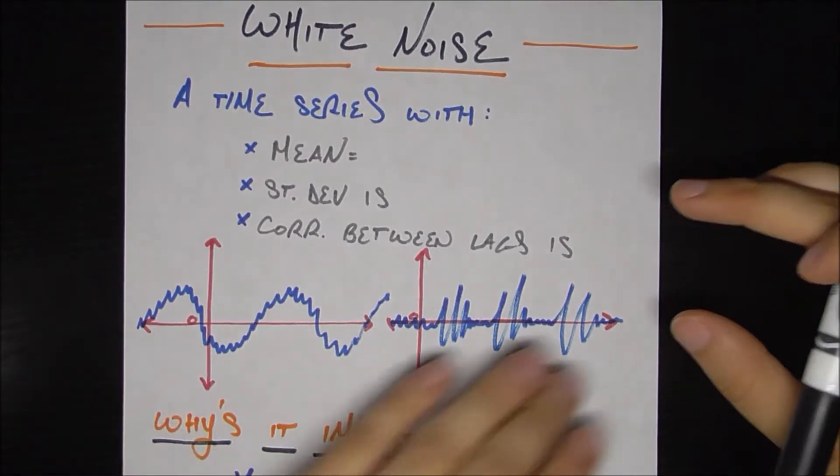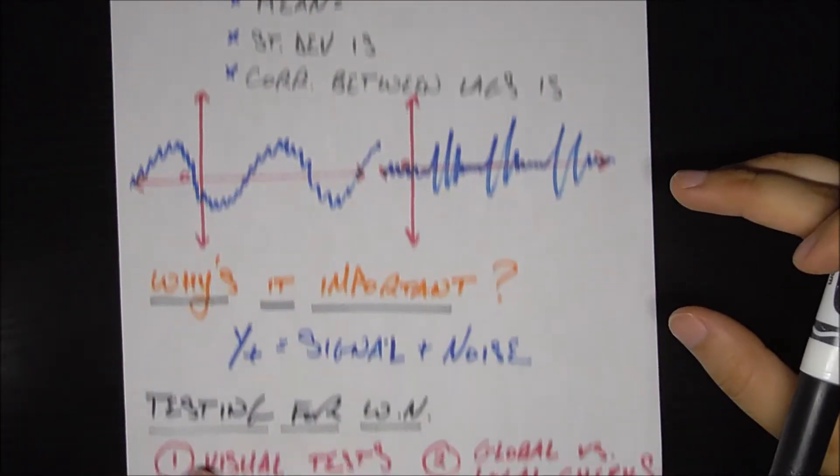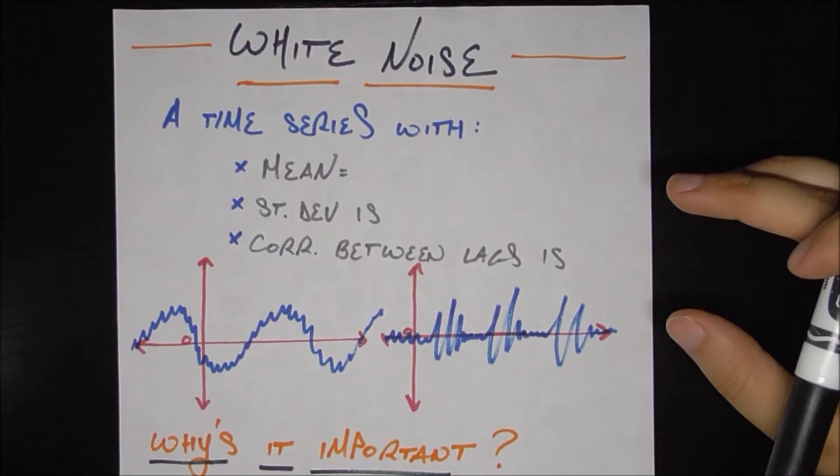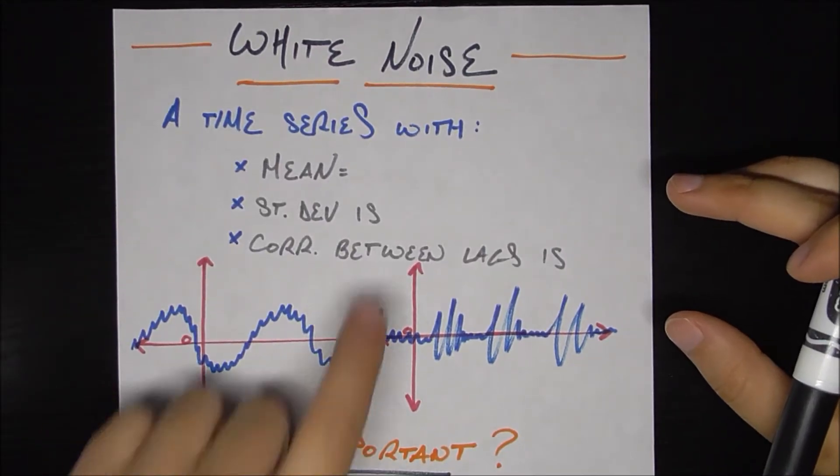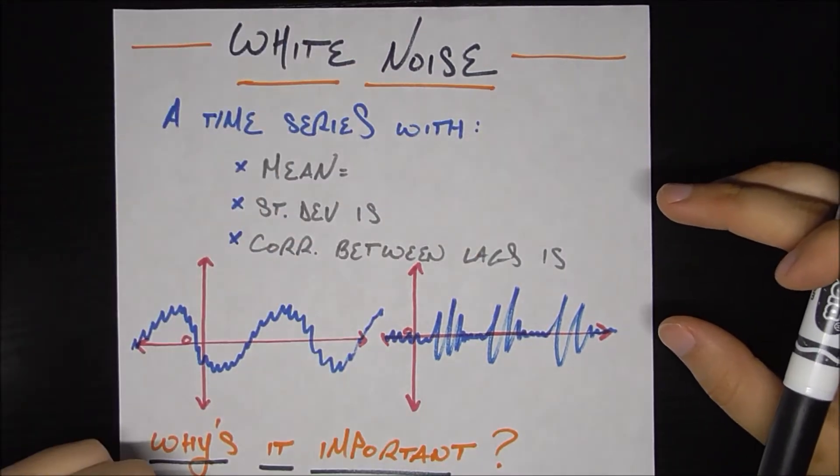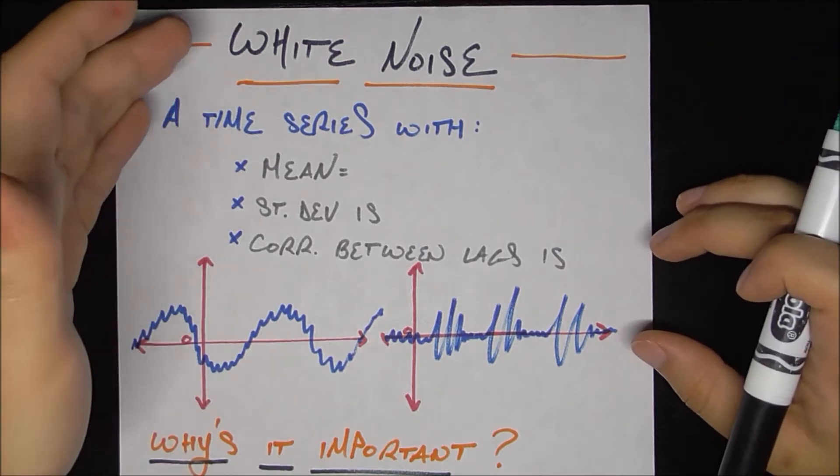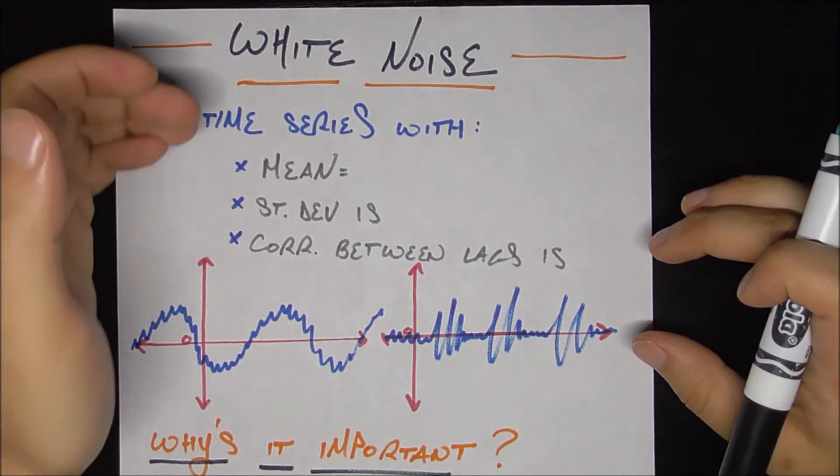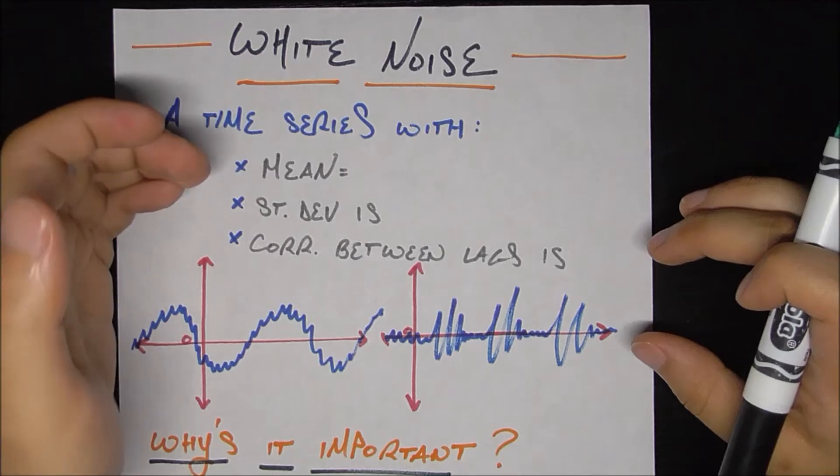So before we get into these pictures of whether or not something is white noise and why it's important, let's go ahead and just define the criteria you need for a time series to be white noise. I should just note that white noise is just a type of time series that meets these different criteria.